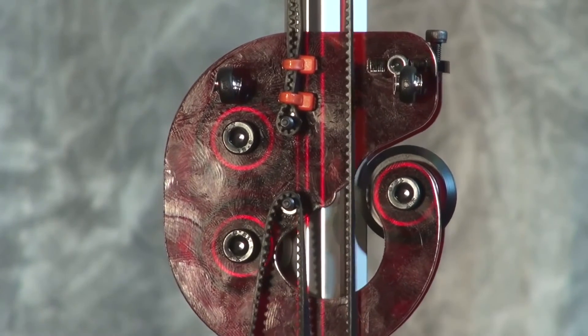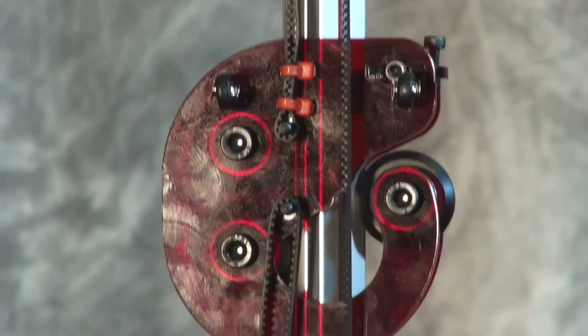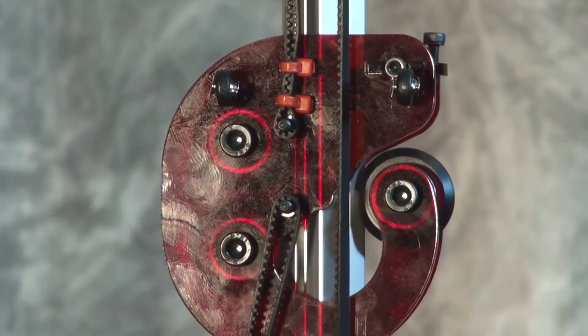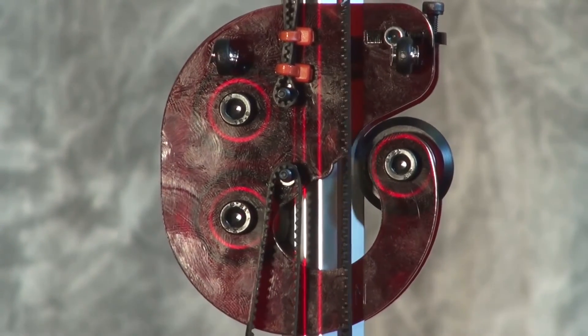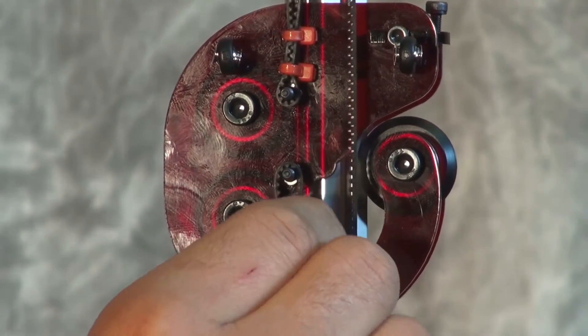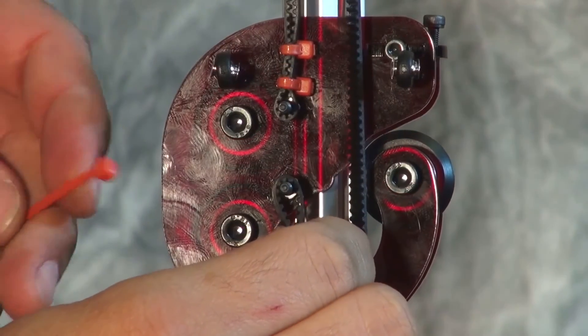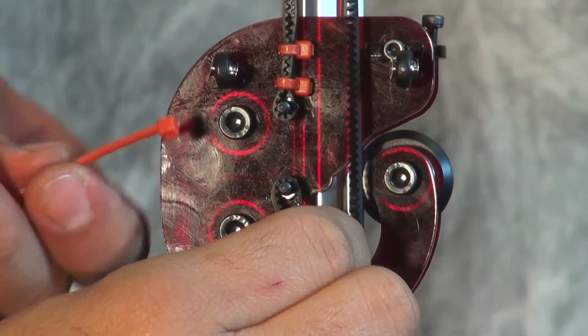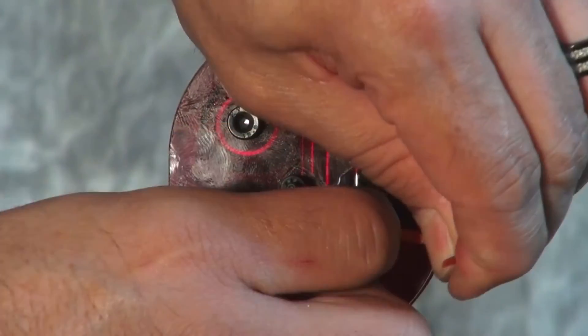So now we're going to apply a little bit of tension to the belt, squeezing it together so it grabs to itself, and then we'll attach another zip tie.